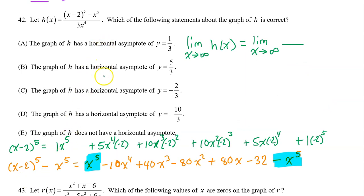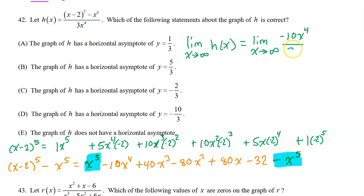Remember, we are looking for the horizontal asymptote. That will come from the end behavior, which is the limit as x approaches infinity of h of x. This will depend only on the leading term. After canceling out the x to the fifth power, the leading term of the numerator will be negative ten x to the fourth power. The only term of the denominator is three x to the fourth power. The x to the fourth power cancels out, leaving the constant negative ten over three. So that will be the horizontal asymptote: y equals negative ten over three. That's why the answer is D.